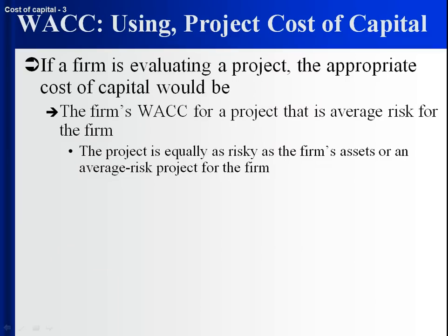This is where weighted average cost of capital comes into play. Suppose you have a firm that's looking at a project. If that project is just as risky as the assets of the firm — if the risk of that project is average for that firm — then an appropriate cost of capital for that project would be the firm's weighted average cost of capital. It's not that the firm is doing the project and that's why its WACC is appropriate; it's because the project has the same level of risk as what the firm is already doing.